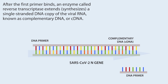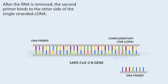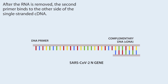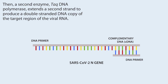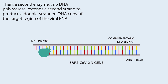After the RNA is removed, the second primer binds to the other side of the single-stranded cDNA. Then a second enzyme, Taq DNA polymerase, extends a second strand to produce the double-stranded DNA copy of the target region of the viral RNA.